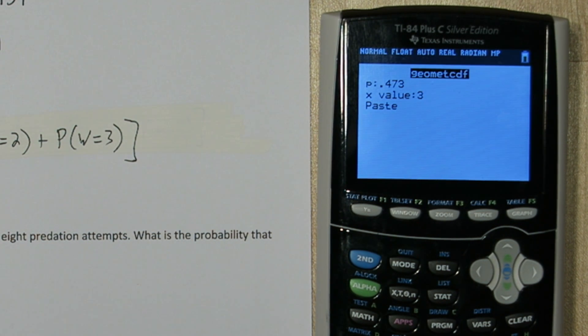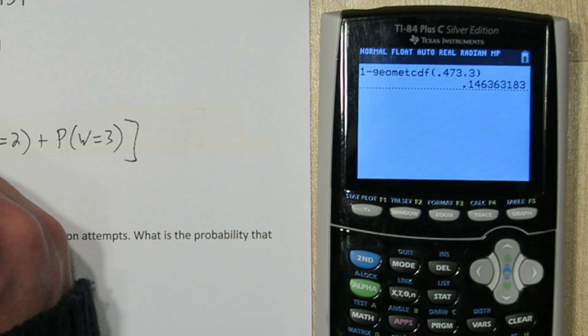This will calculate the probability that the first success occurs in the first, second, or third trial. So when I press enter and then enter again, it's going to take one minus that probability. And we get our probability of interest, about .146.